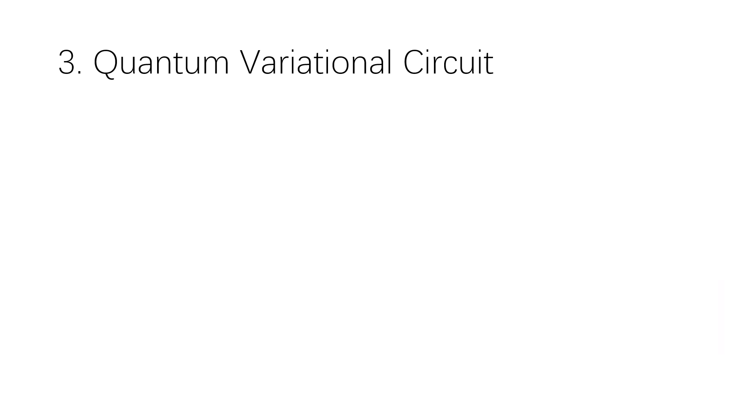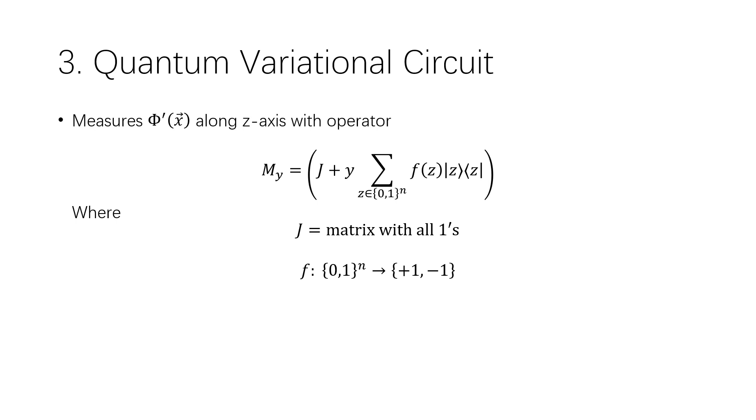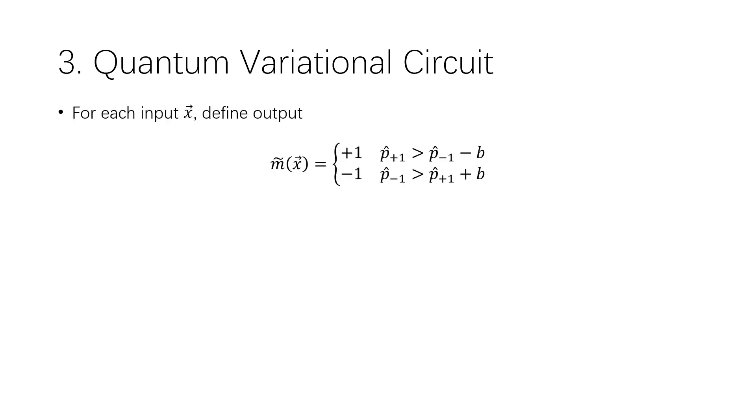We then measure the output of the ansatz according to this measurement operator in the z-axis that changes for different test labels. We will obtain a distribution of zeros and ones, which will be mapped to plus one and minus one accordingly. We assign label plus one if the probability of measuring zeros is larger than ones and vice versa.